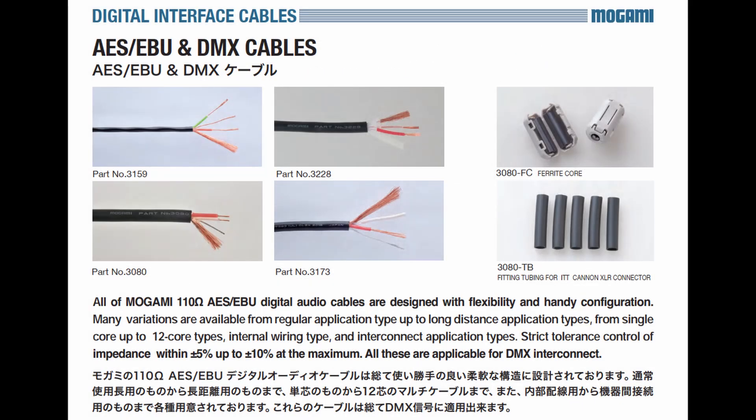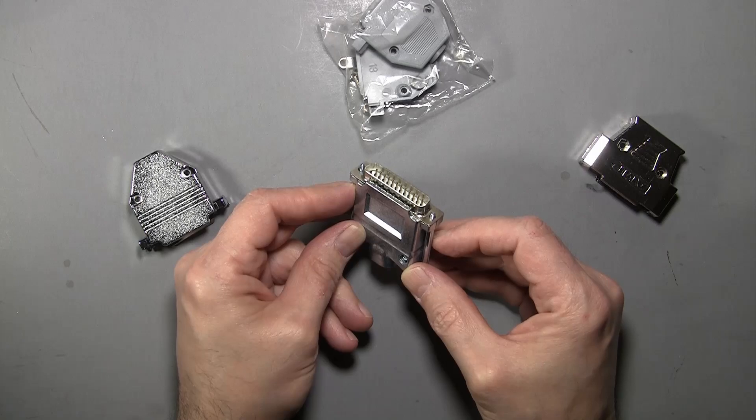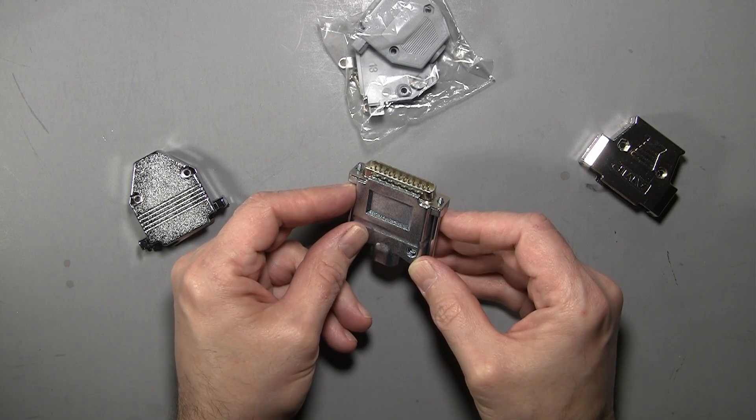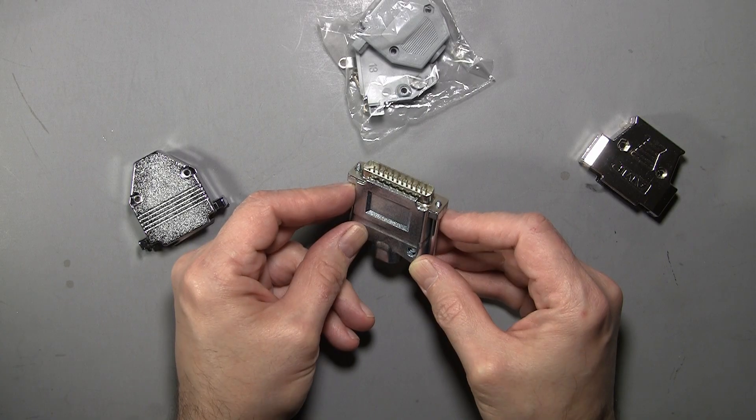If you're making a digital cable, be sure to use AES-specified 110-ohm cable. Before you wire a D-Sub, whether it be for digital or analog, take a look at your owner's manual and make sure you know what the pinout is.